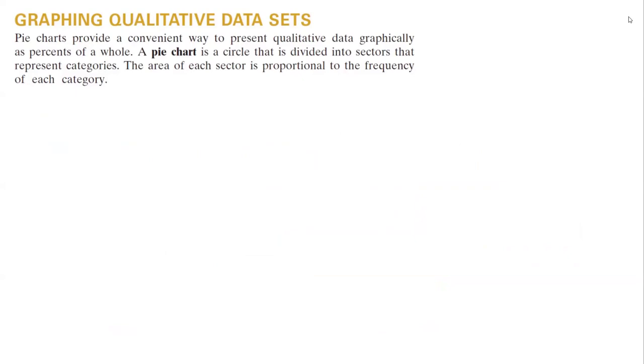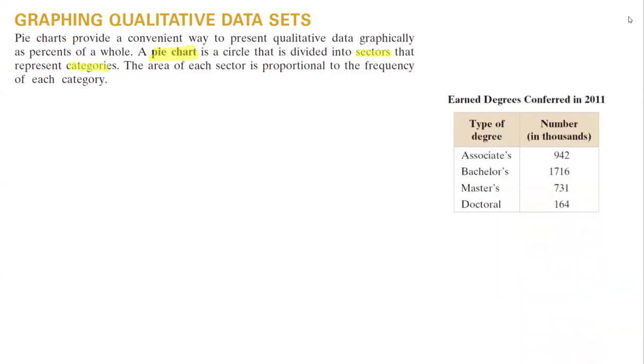When it comes to graphing qualitative data sets, one of the popular ones is a pie chart. A pie chart is a circle that is divided into sectors that represent different categories. The area of each sector is proportional to the frequency of each category. In this example, we have the data about earned degrees conferred in 2011.